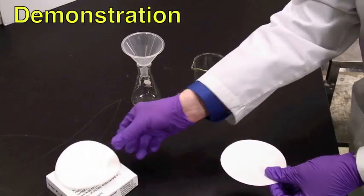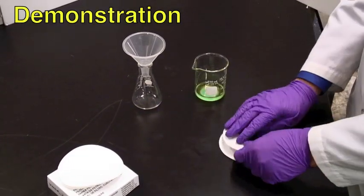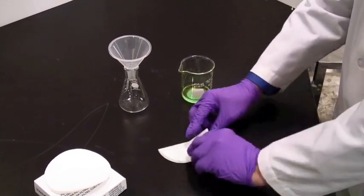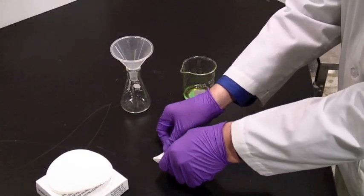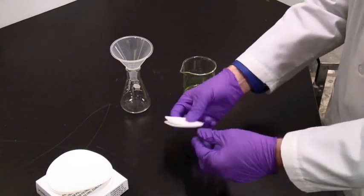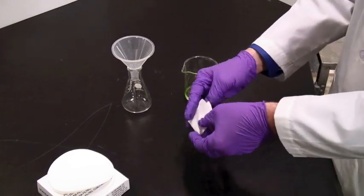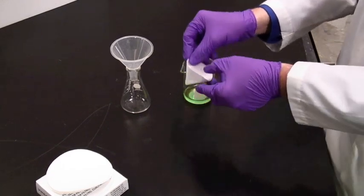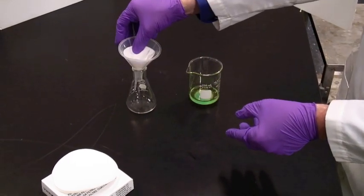Filter papers are circular. Fold it in half, and then in half again. Take this quarter circle and open it with three on one side and one on the other, and you have a small cone, and that fits into the funnel.